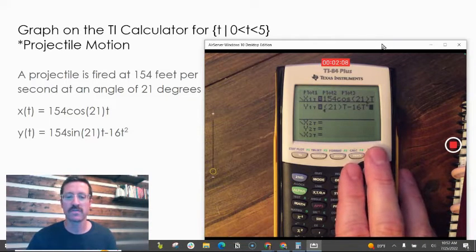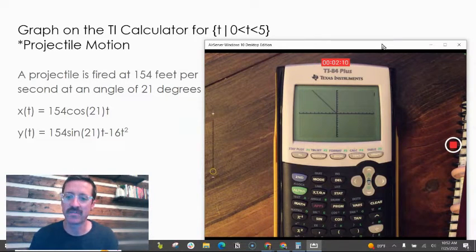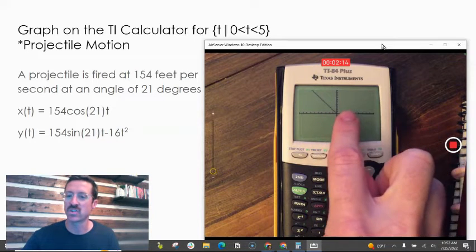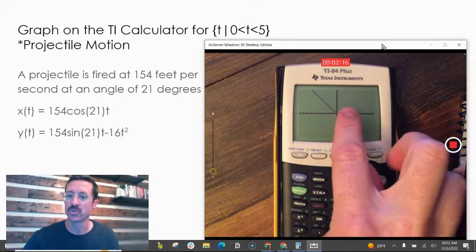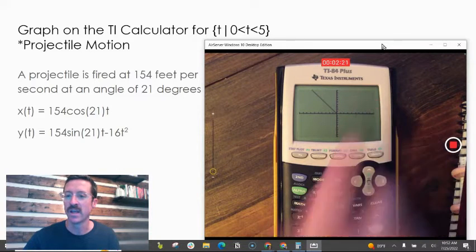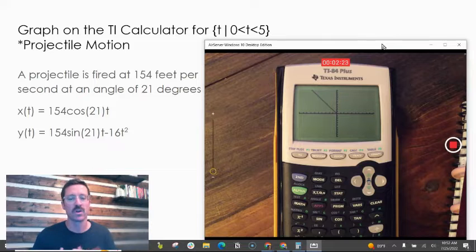Now that I've got my equations, what you're going to find when you hit graph is the graph doesn't look good. This projectile should be going in this direction because the horizontal distance traveled should be increasing. We should see something like this, looking like a projectile. So we know something's not right with the graph.